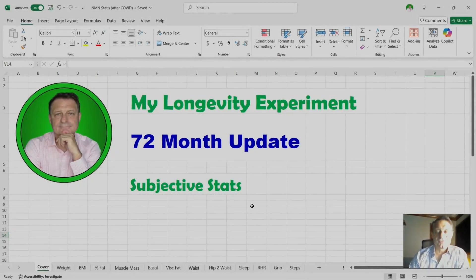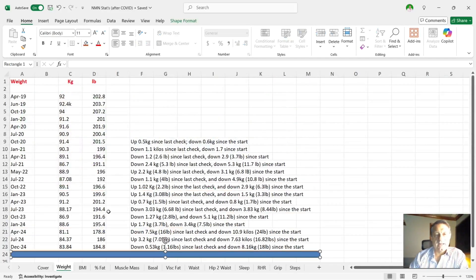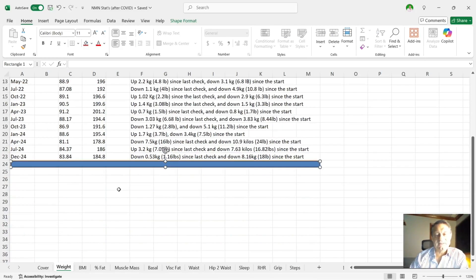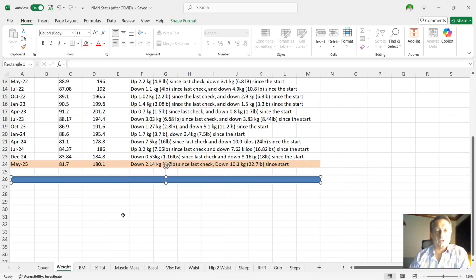Let's move on to my objective stats. Some of these are going to be slightly weird because I have changed biometric scales. My weight, you can see there going back to April, 92 kilos, which is 202 pounds to start with. In December of last year, it was 83.84 kilos, 184.8 pounds. It's now down to 81.7 kilos, which is about 180.1 pounds. That's down 2.14 kilograms, 4.7 pounds since the last check, and down overall 10.3 kilograms, down 22.7 pounds since the start.